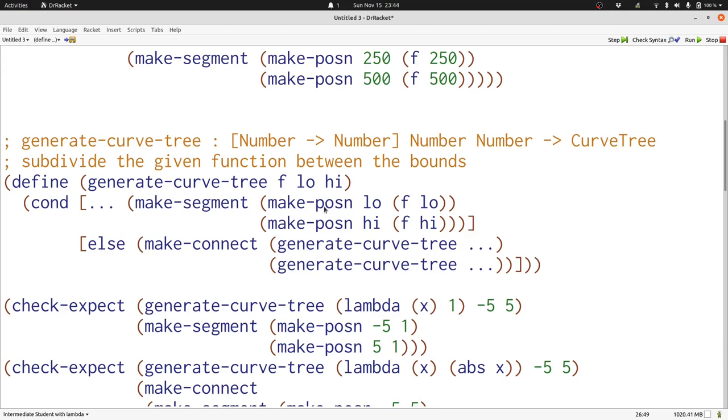Generate curve tree takes three inputs. We're definitely going to keep the function the same, so let's fill that in. What's the low value for the left curve tree? It's the same as low. Similarly, high is going to stay the same for the right curve tree.